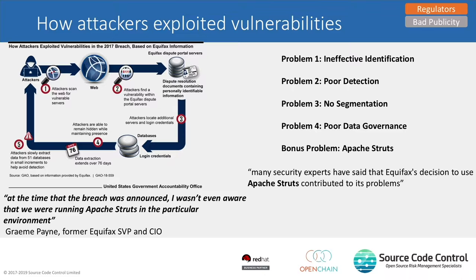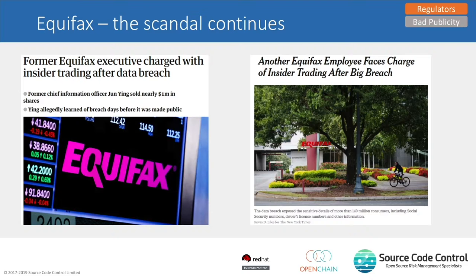There was ineffective identification and poor detection. When the Apache Struts vulnerability was announced on the National Vulnerability Database, hackers get visibility at the same time as the good guys. People start probing websites looking for unpatched Apache Struts. They got into Equifax's network and sat there for 76 days, gradually siphoning off data — all the financial records on each individual in the US. There's a quote from the report: the former CIO at the time of the breach didn't even know they were using Apache Struts in their code. A developer was also investigated for insider trading — he was aware of the breach before it became public and shorted the stock.